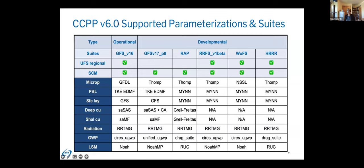The schemes and suites released as part of CCPP version 6 represent different types of parameterizations across columns, including operational and developmental configurations. All suites work with the CCPP single column model, but only a few are meant for the UFS public release. It's important to note that suites named, for example, 'GFS version 16' are not the operational version 16 code — they are the schemes used in GFS version 16 as of the top of the main branch when the public release was issued.